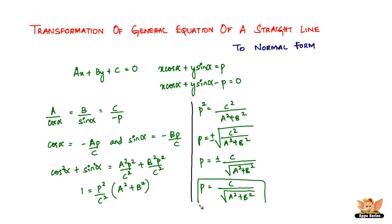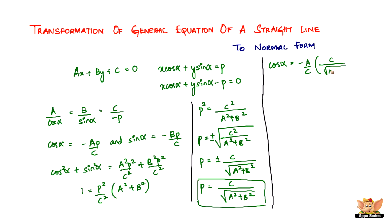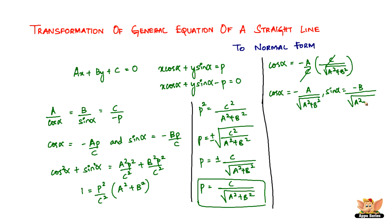We found p because we need to transform the general equation to the normal form. Substituting p into the expressions for cos α and sin α, the c's cancel, giving cos α equal to negative a divided by the square root of (a² plus b²), and sin α equal to negative b divided by the square root of (a² plus b²).